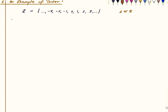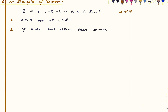The first property is n ≤ n for all n — that is, reflexivity. Second is: if two integers are both less than or equal to the other, then they are equal — that is anti-symmetry. And lastly, if m ≤ n and n ≤ P, then m ≤ P — that is transitivity. There is also an extra fourth property.